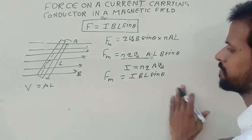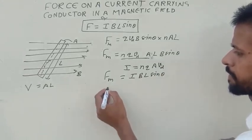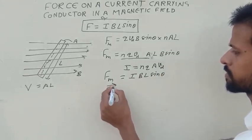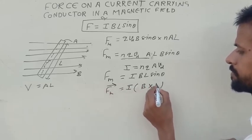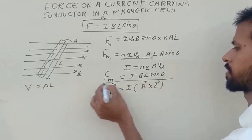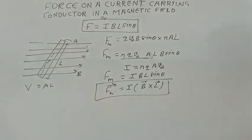In vector form, this may be written as magnetic force equals I L cross B. This is the expression for magnetic force.